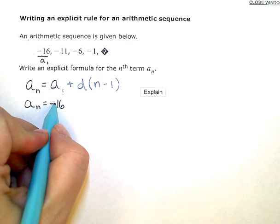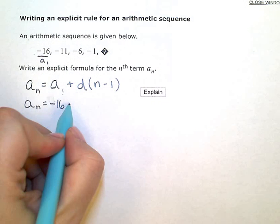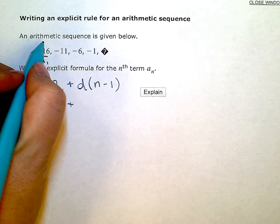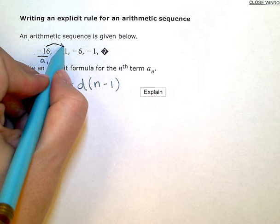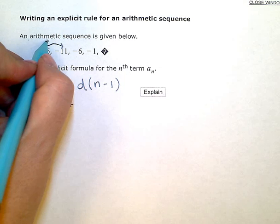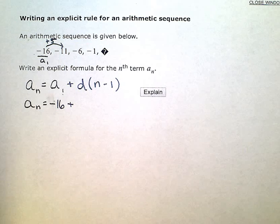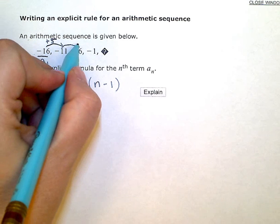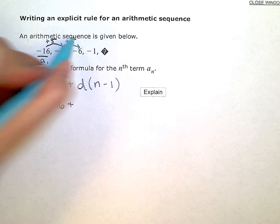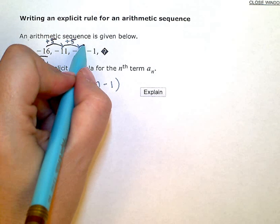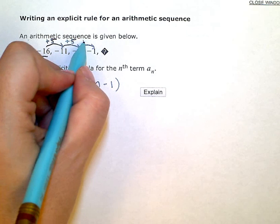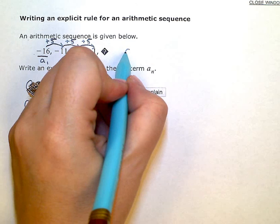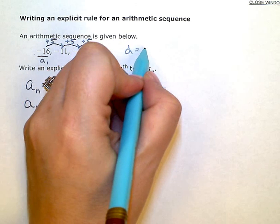So negative 16 plus my common difference here to get from negative 16 to negative 11, I'm adding 5, to get from negative 11 to negative 6 I'm adding 5, to get from negative 6 to negative 1, again adding 5. So my common difference for this sequence is 5.